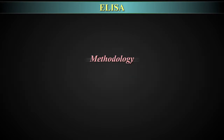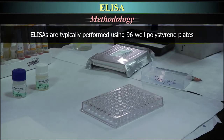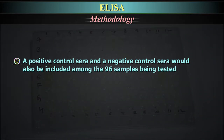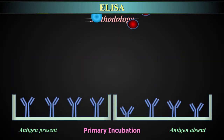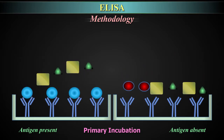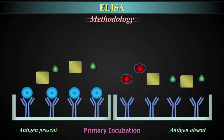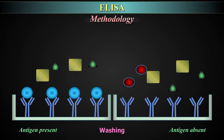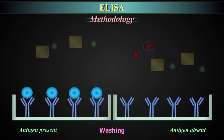Methodology. ELISAs are typically performed using 96-well polystyrene plates. The serum is incubated in a well and each well contains a different serum. Positive control sera and negative control sera would also be included among the 96 samples being tested. Antibodies or antigens present in serum are captured by corresponding antigen or antibody coated onto the solid surface.